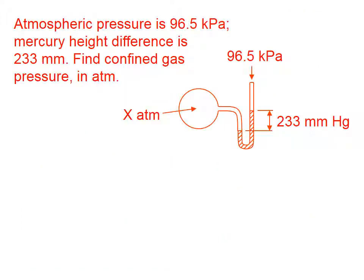Let's do an example. The atmospheric pressure is 96.5 kilopascals. The mercury height difference is 233 millimeters. Find the confined gas pressure in atmospheres. We've represented this problem using this diagram. This is an open-end manometer, so we're going to use the small plus height equals big equation. Obviously, the 233 millimeters of mercury is the height, so that term is taken care of.